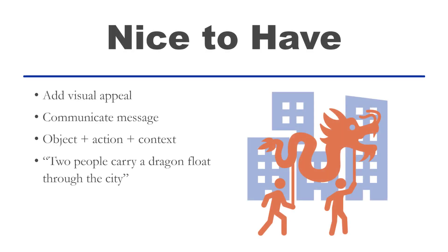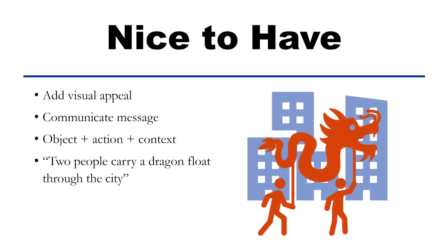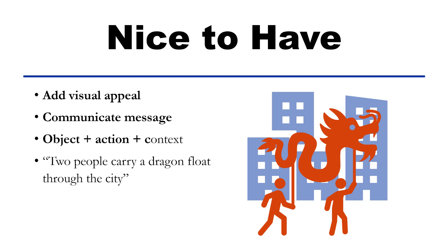Nice to have. Most images of people fall under this nice to have category. These are the images you add to your content to add both visual appeal and communicate your message to the viewer. Consider using the object, action, context method of descriptions. You describe the main object in the image, its actions, and any context needed. This results in a concise, meaningful description for your nice to have images.